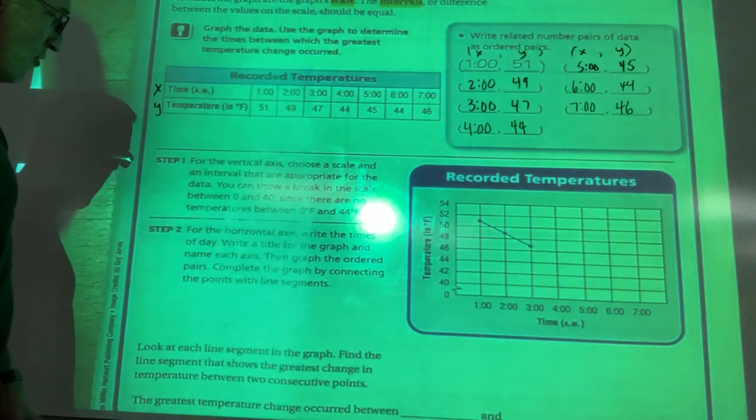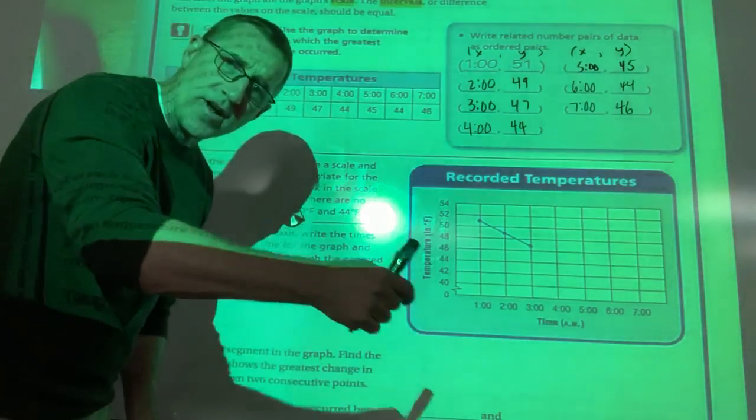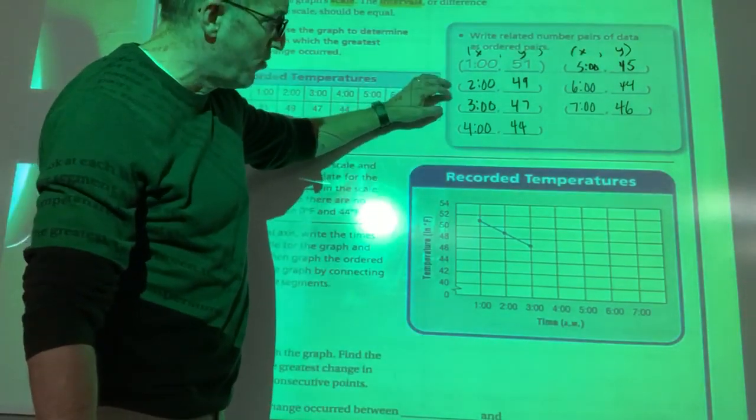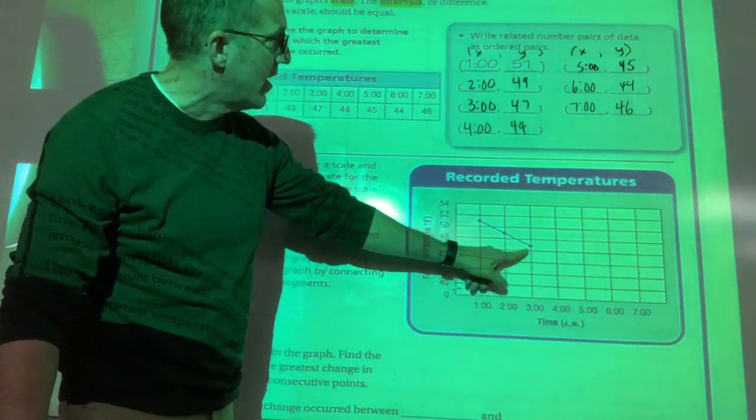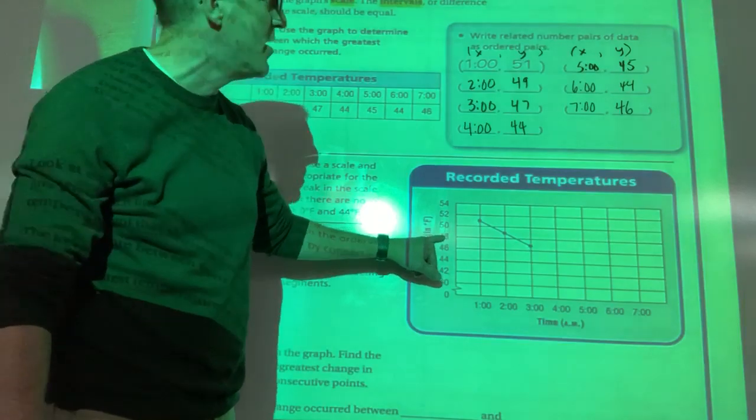So now we're just going to plot our points. It's just over up, right? Over X, up Y, over up, over up. So they've already plotted all the way out to three for us, three o'clock at 47, which is between 46 and 48. So they put it right in the middle.